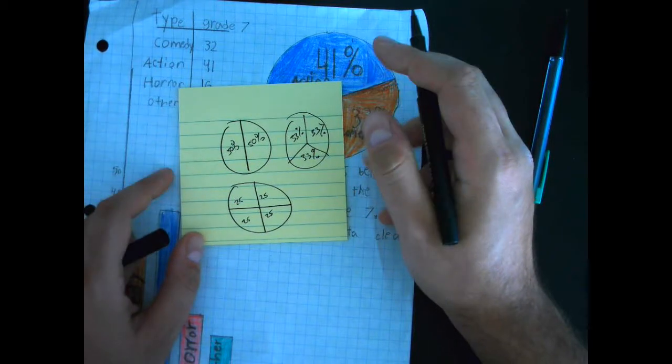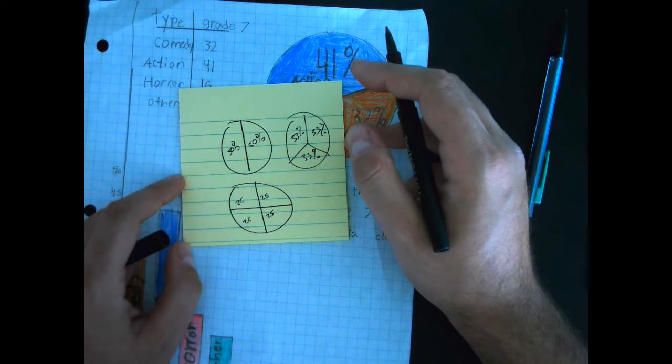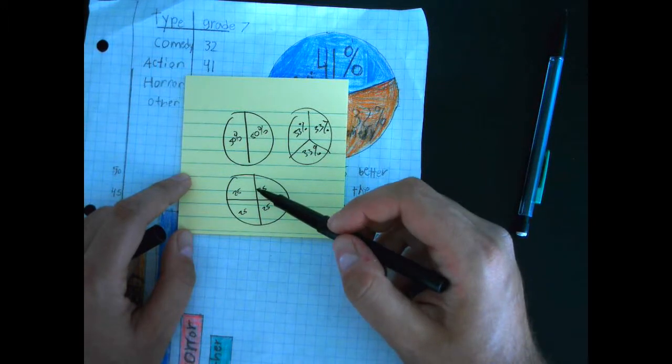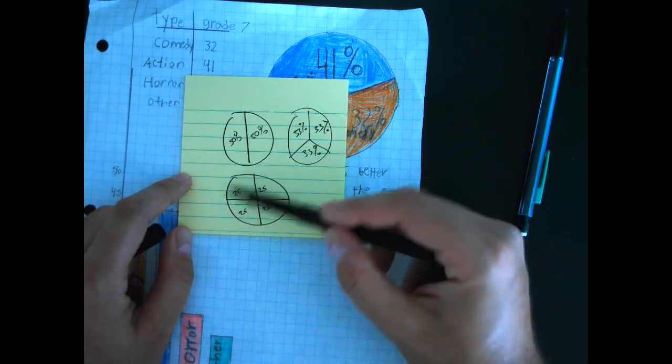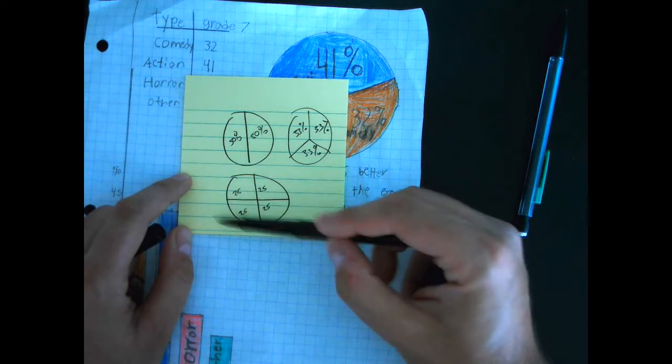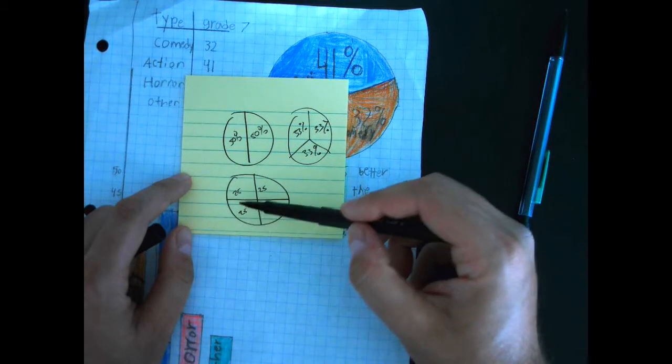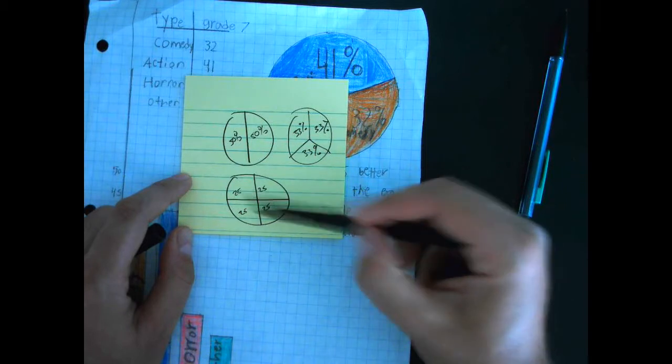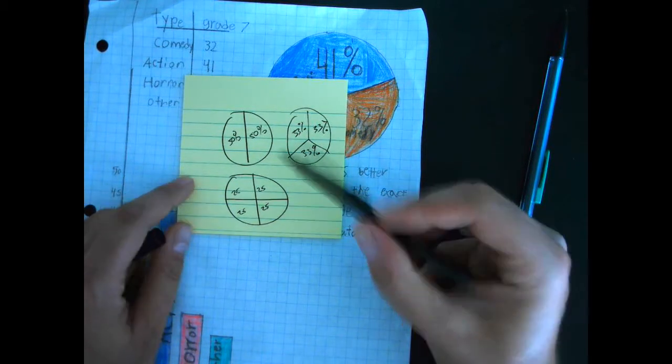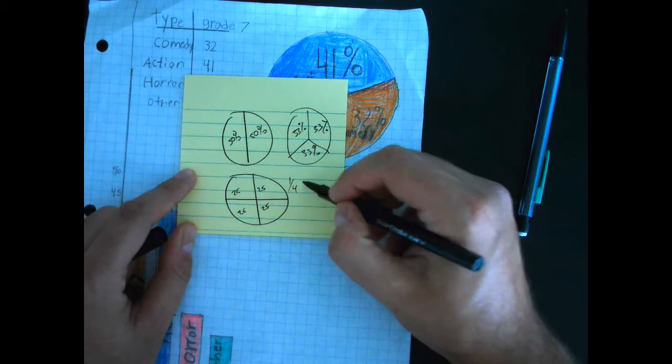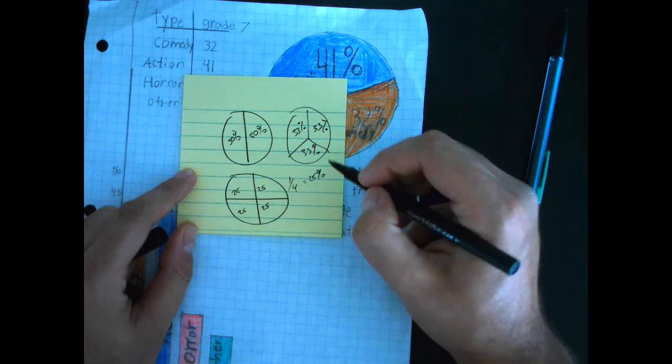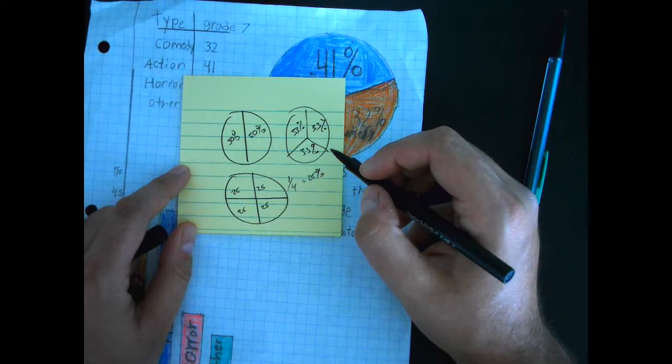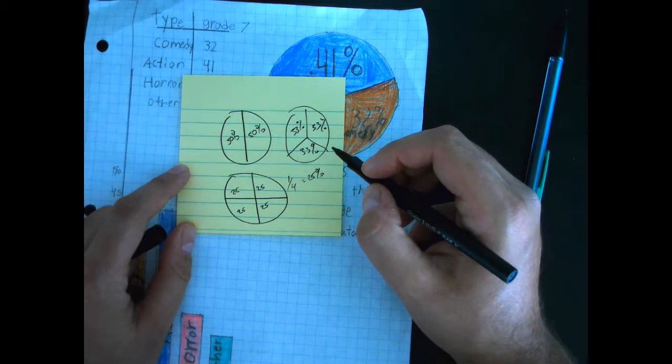And then the last thing I'm going to ask you is what connections can you make with this fraction right here, with other mathematical concepts that we've been doing. There's 25% in each section here. We know it's a quarter. We know it's 25%. And everything that 25% brings to the table, that includes 0.25, 25 over 100.